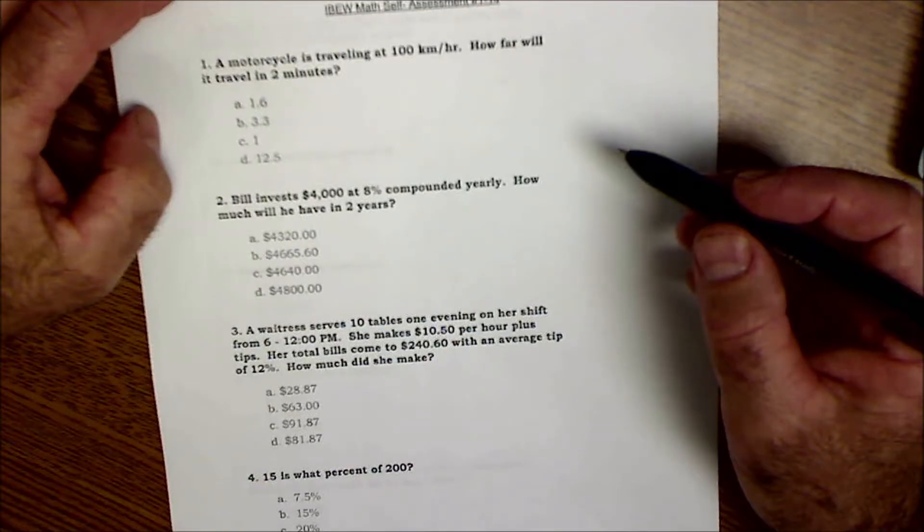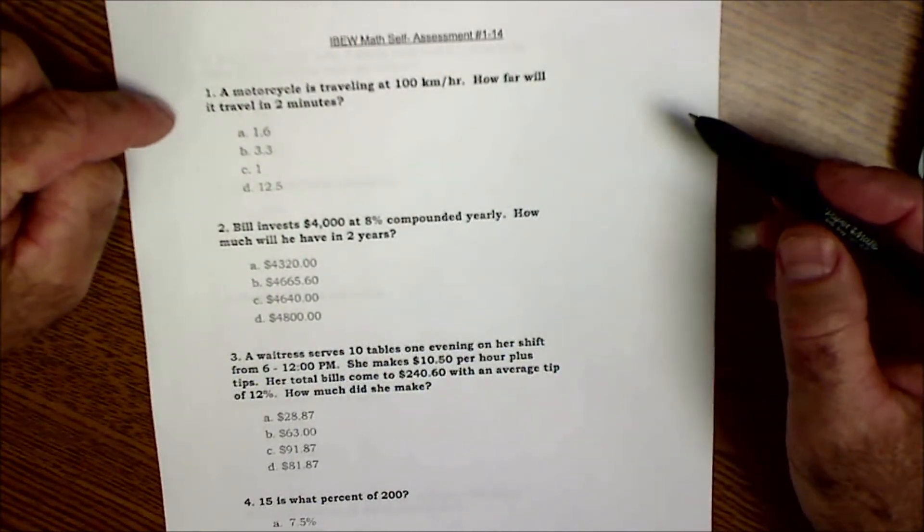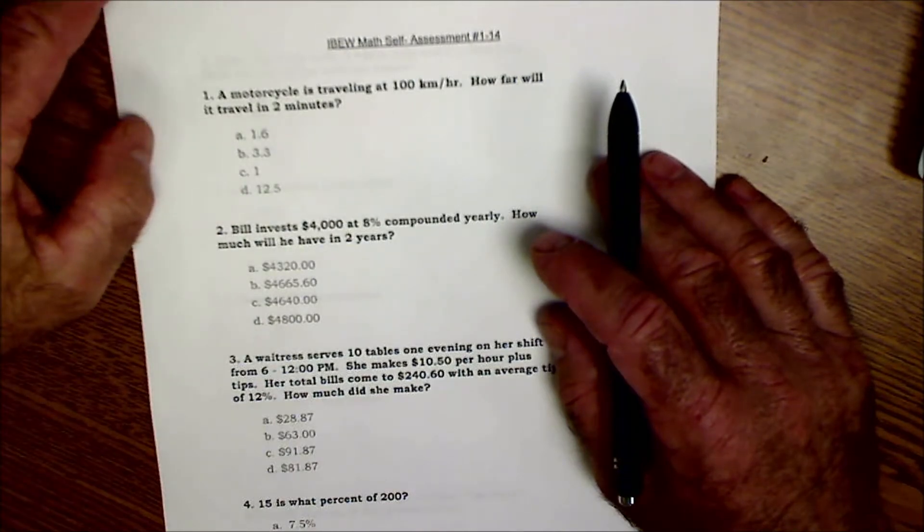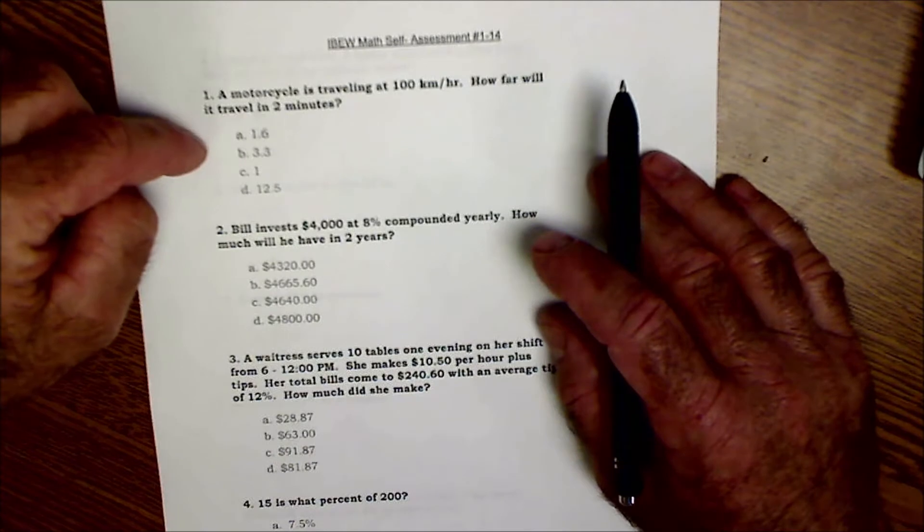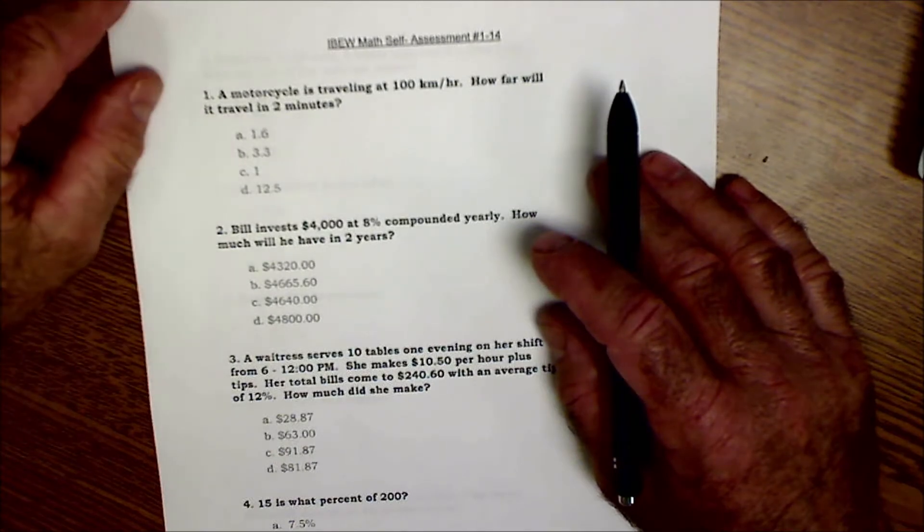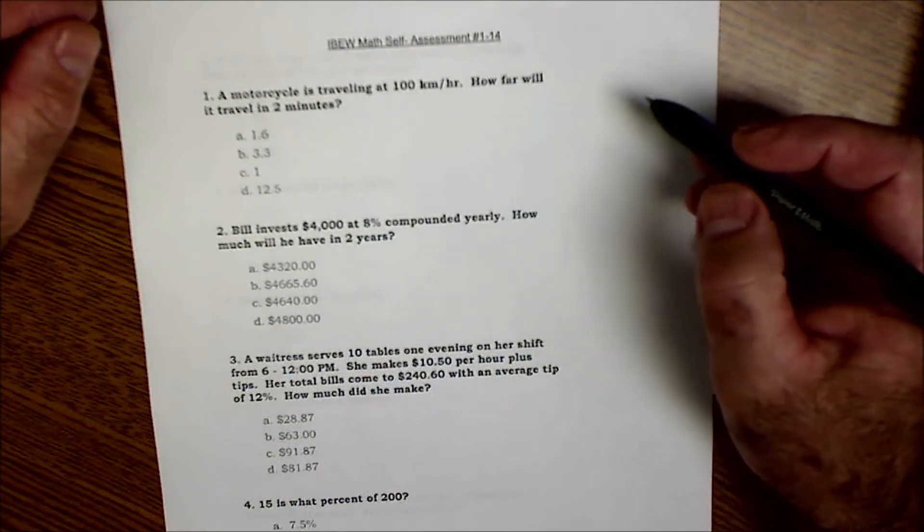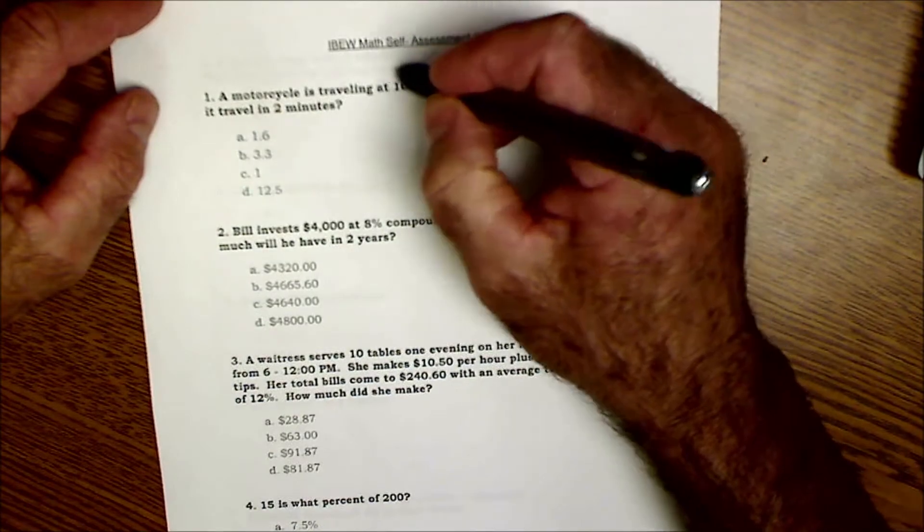Okay, before you get started, just a couple testing strategies. One is in a multiple choice test you always want to eliminate answers that don't make any sense or that you know won't work, and that'll increase your probability if you have to guess on which one was right. The second pointer on test taking standardized math test taking is mark up the exam as much as you can, really circle or put boxes around the important things so you don't make any careless mistakes.